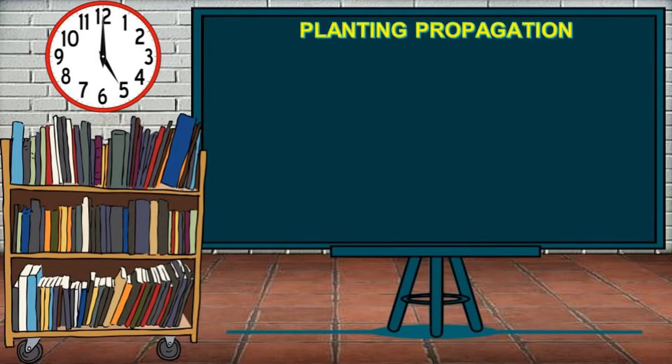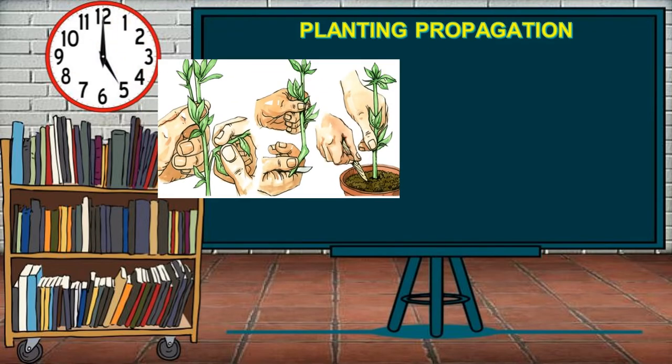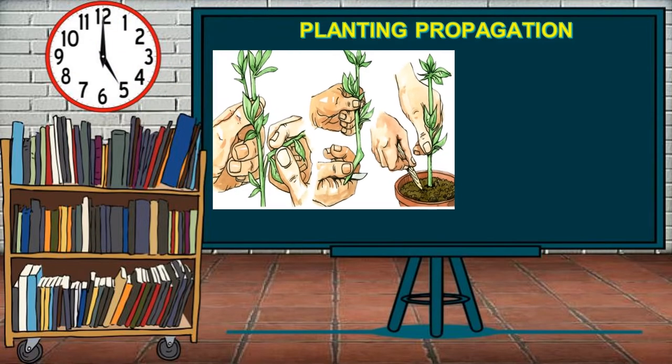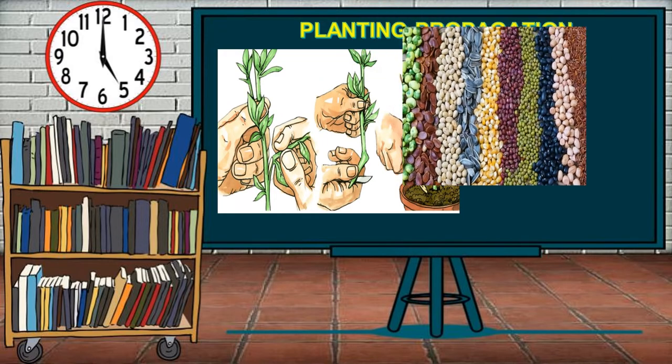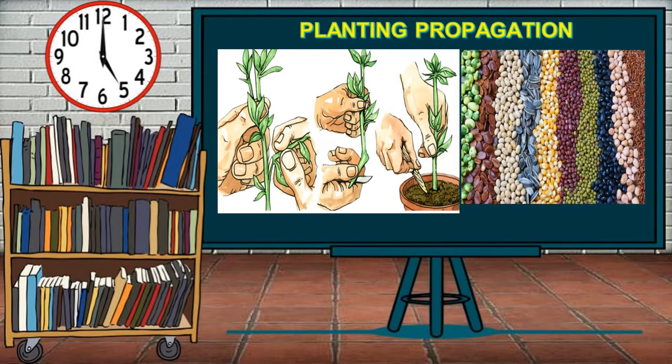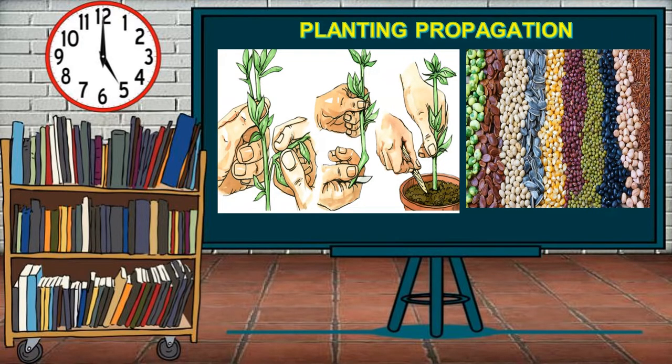Plant propagation is the process which grows new plants from a variety of sources such as seeds, cuttings, and other plant parts. Plant propagation can also refer to the man-made or natural dispersal of seeds.